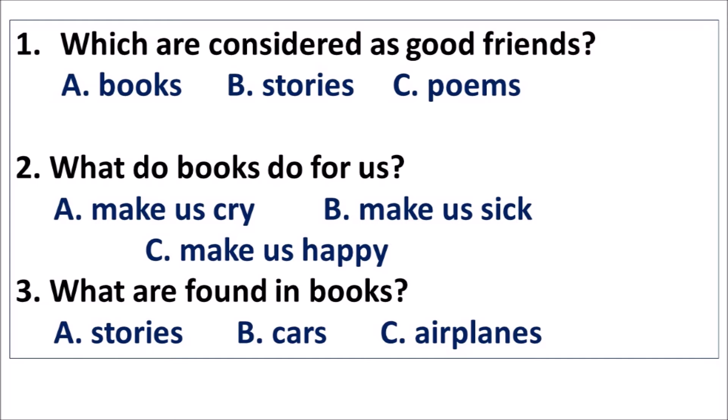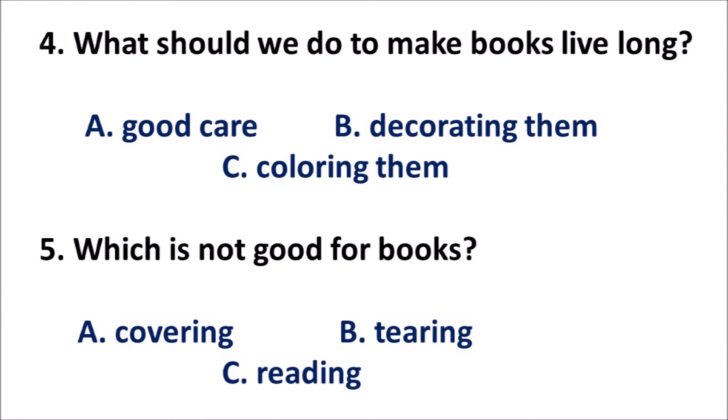Number three: What are found in books? A. Stories. B. Cars. C. Airplanes. Number four: What should we do to make books live long? A. Good care. B. Decorating them. C. Coloring them. Number five: Which is not good for books? A. Covering. B. Tearing. C. Reading.